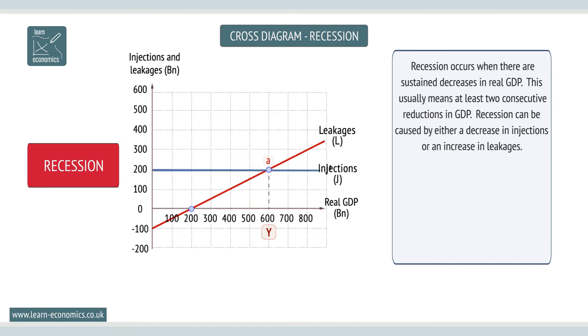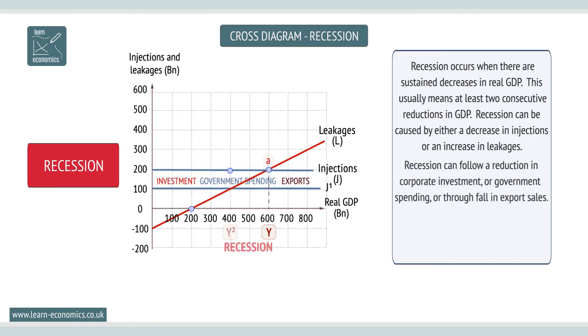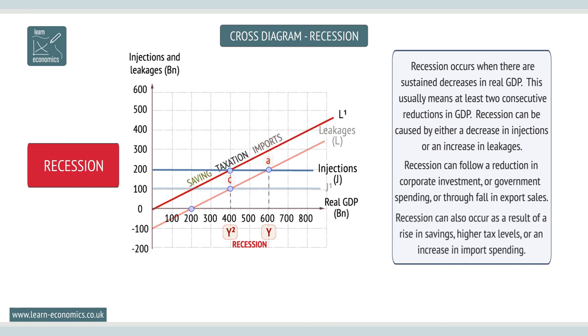Recession can follow a reduction in corporate investment or government spending or through a fall in export sales. Recession can also occur as a result of a rise in savings, higher tax levels, or an increase in import spending.